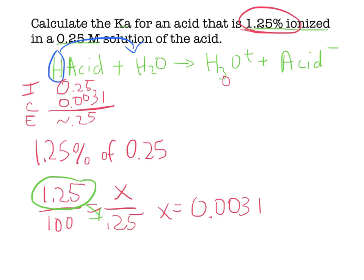Then I had 0 plus x, so plus 0.0031. And the acid minus was 0.0031, which makes this 0.0031 and 0.0031.